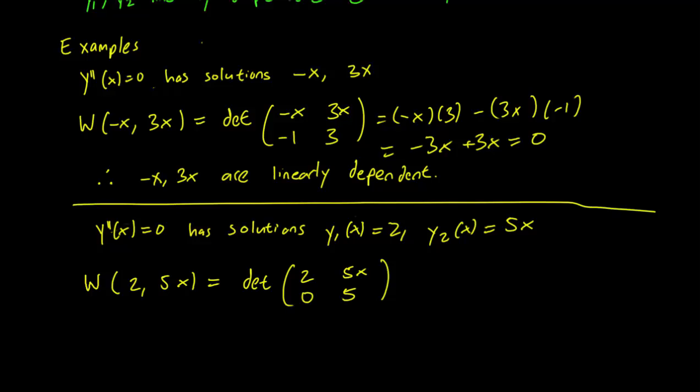So we take that determinant, which is just going to be 2 times 5 minus 5x times 0, which is 10. And 10 is, of course, never 0.